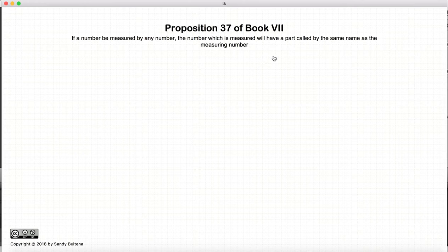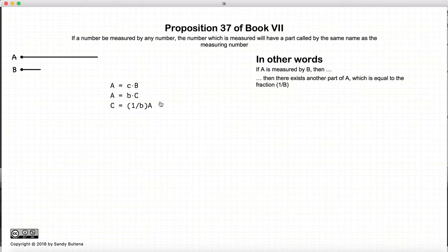So just pause the video and see if you can decipher what this means on your own. In my version of the translation, if a is measured by b, then there exists a fraction or another part of a such that it is the fraction 1 over b. So that's what we're trying to demonstrate. If b measures a, there is another number c which measures a b number of times.